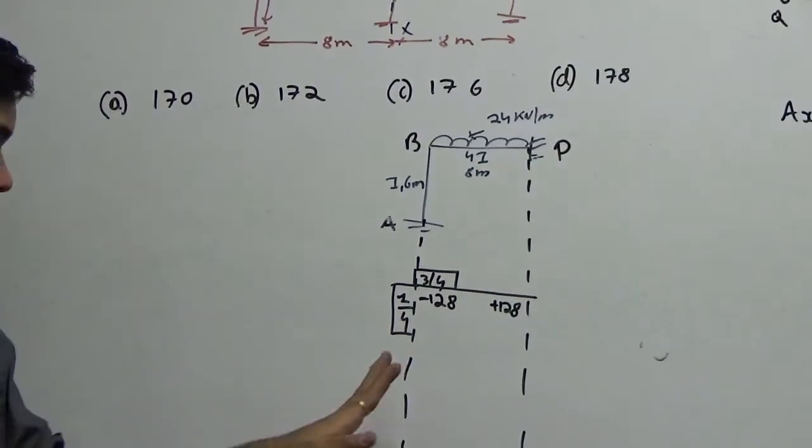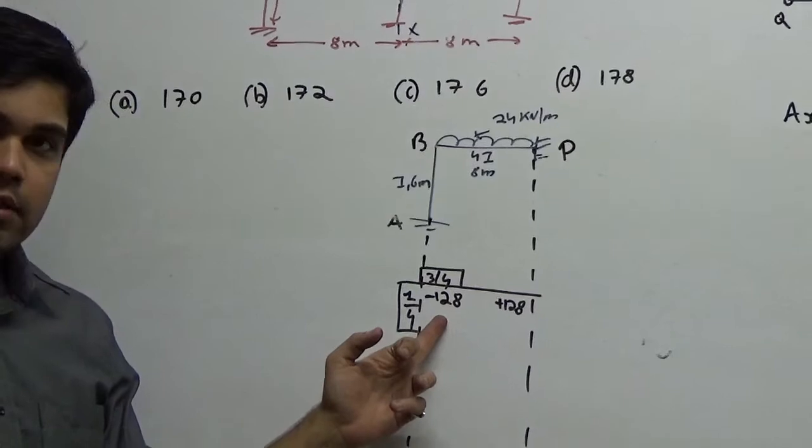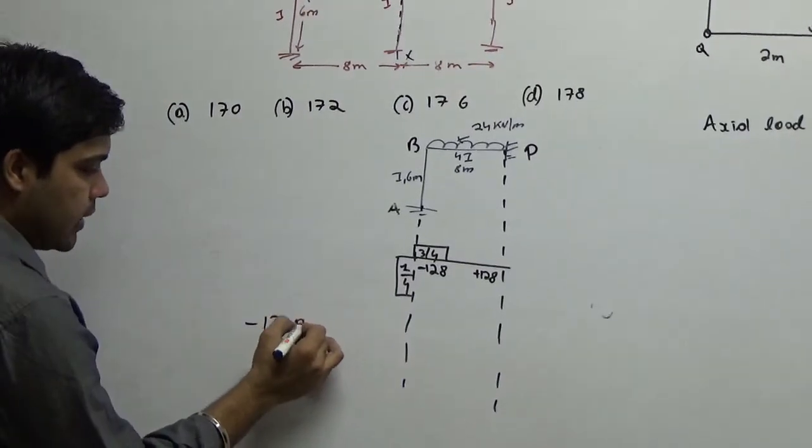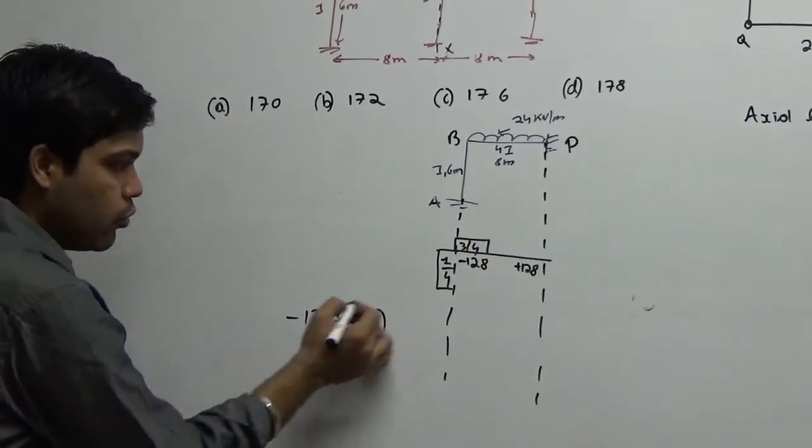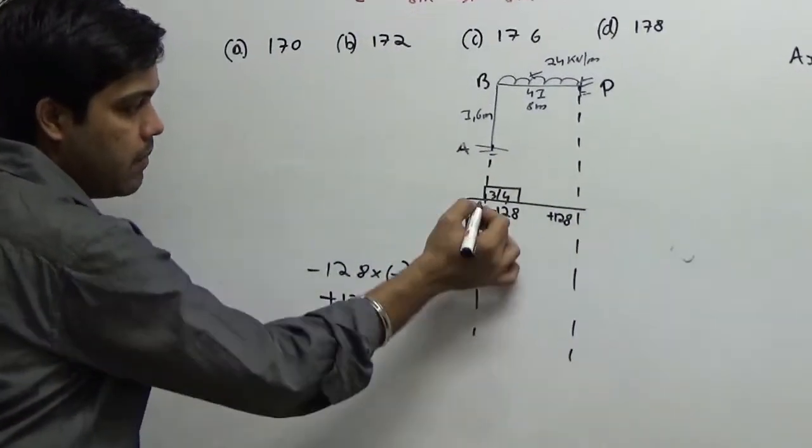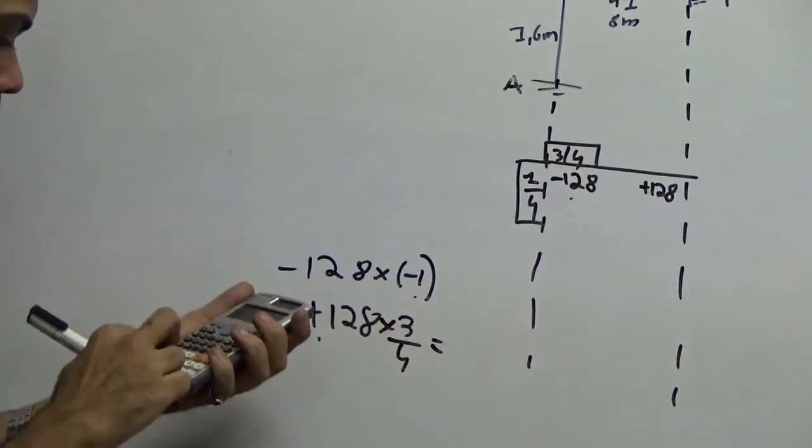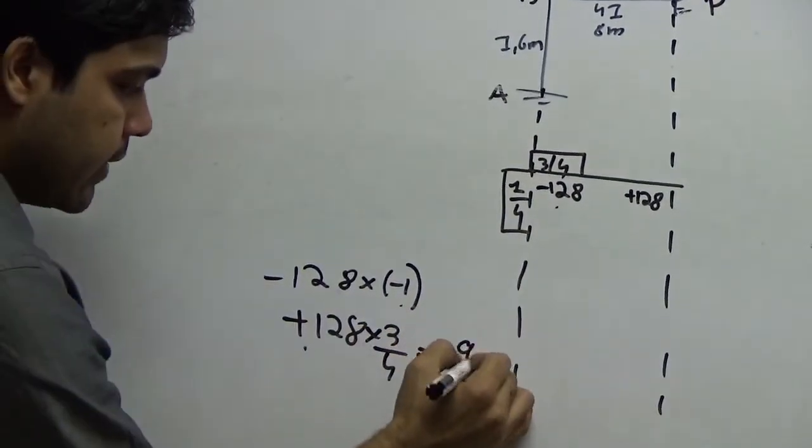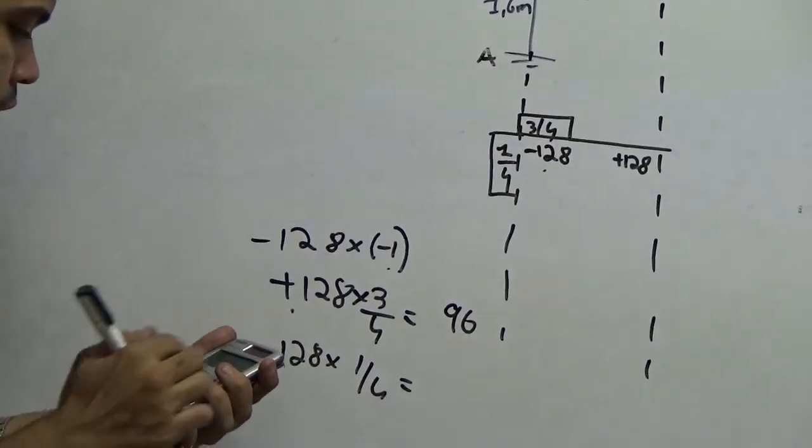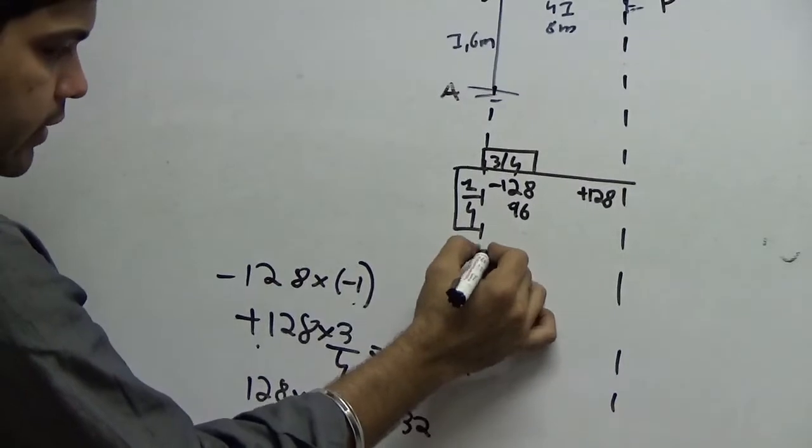Now if you see this, what do we do in moment distribution? Very carefully look at this point. At minus 128 you have an unbalanced moment acting at this joint. You take minus 128, multiply it by minus sign because you want to balance this. So you got plus 128. Now this 128 will be shared to this column and this beam based on the distribution factor. You first multiply it by 3 by 4, that gives you 96. Then you multiply 128 by 1 by 4, that gives you 32.